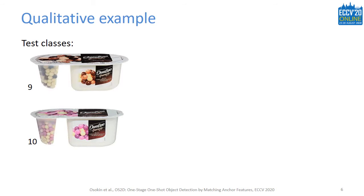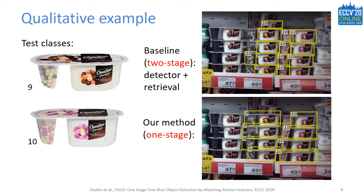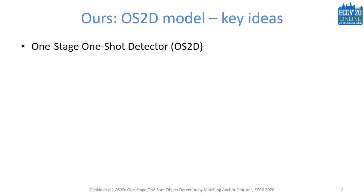To show why this might be a good idea, I'll use a qualitative example. Consider the task of detecting these yogurts. The packages consist of two separate parts, and nothing like that was observed in the training set. The two-stage baseline detects many parts but fails to merge them into correct detections. This failure cannot be fixed by a class-agnostic object detector without modifying the training set. Our one-stage method knows that the classes to detect consist of two parts, so it can produce correct detections.